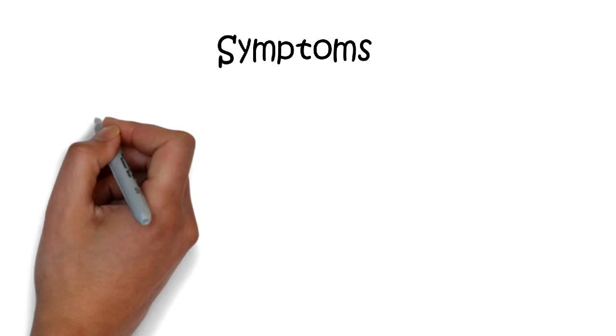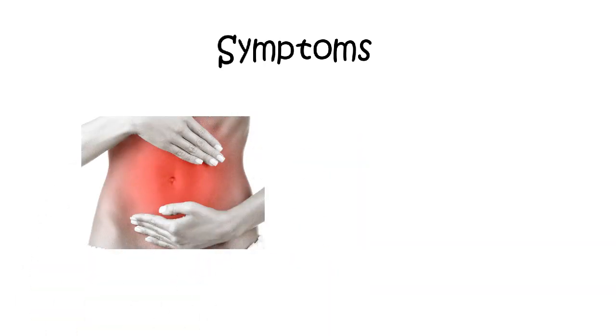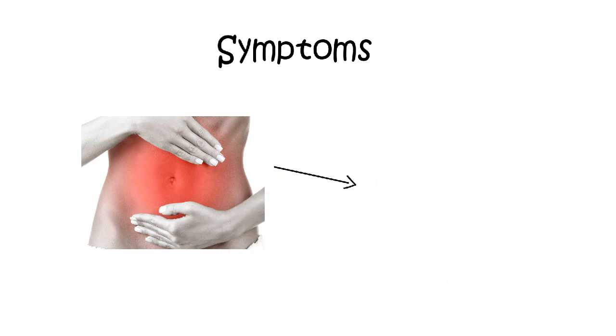The symptoms of appendicitis can be understood through Murphy's triad: pain, vomiting, and temperature. The appendix pain is poorly localized, colicky in nature, and typically starts in the periumbilical region, shifting to the right lower abdomen after six hours.